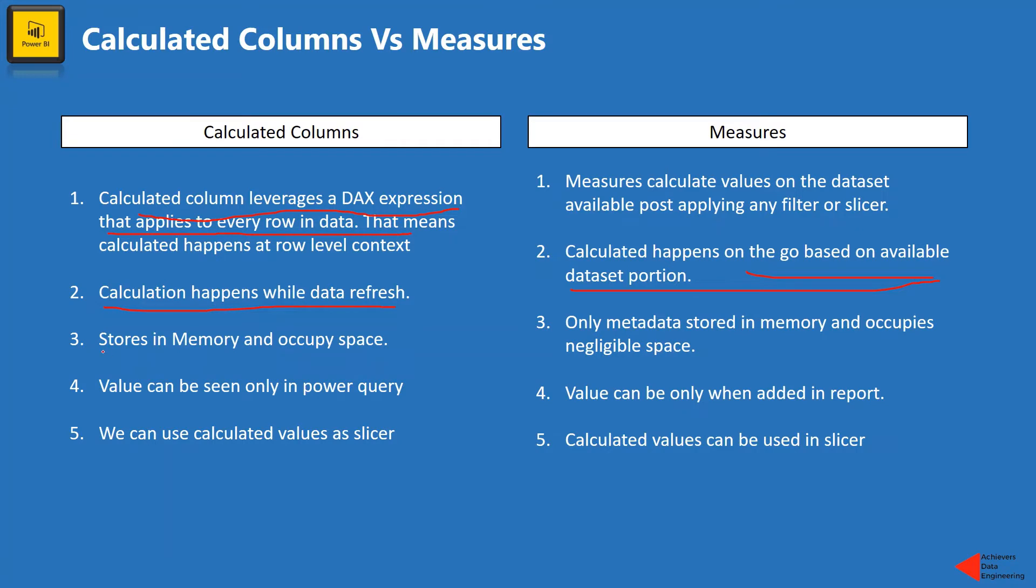Alright. Now, the third difference is calculated columns are stored in memory. And that's why they occupy space in memory. However, in case of measures, they are not occupying memory. So whatever DAX we write in the process of creating measures, only that metadata is stored as text. So that's kind of a negligible space that is occupied by measure.